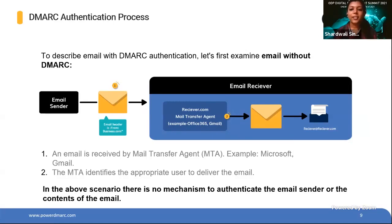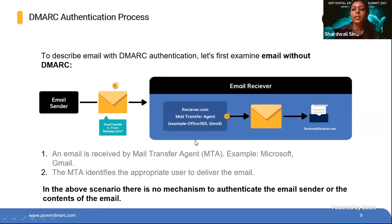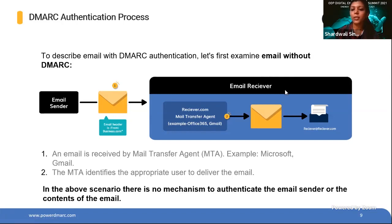Next is DMARC. DMARC stands for Domain-based Message Authentication, Reporting and Conformance. It is an authentication system that protects your organization's domain from spoofing and phishing attacks. To understand DMARC in detail, let's examine a scenario when there is no DMARC. In this case, when an email comes from the sending domain, there is no way for the MTA of the receiving domain to authenticate the email sender or the content, and it may end up being delivered to the recipient.